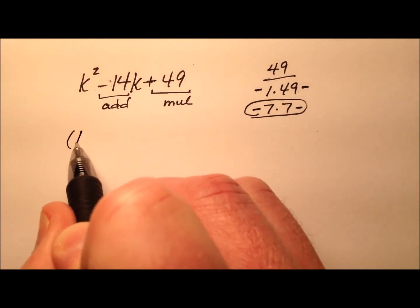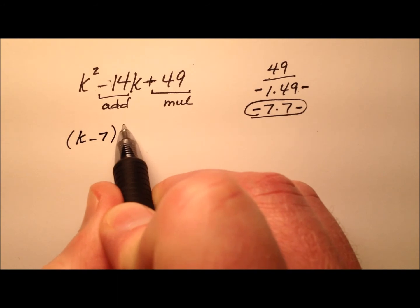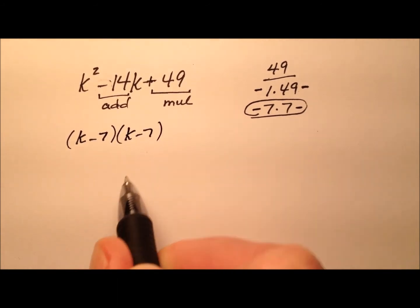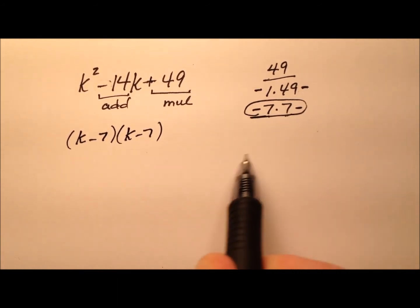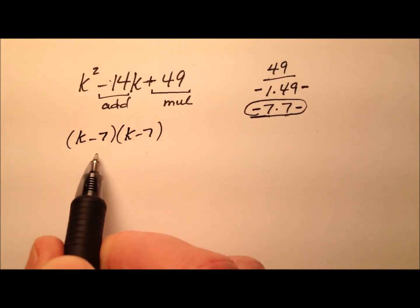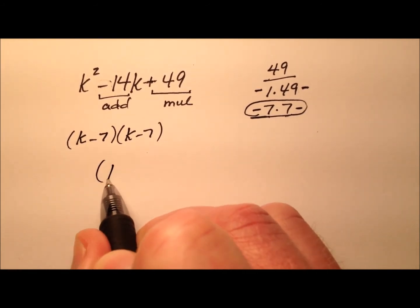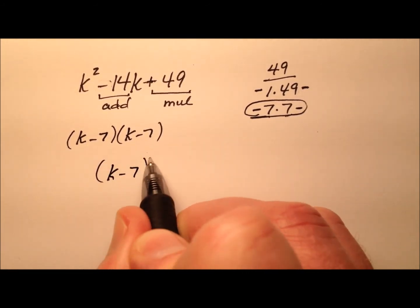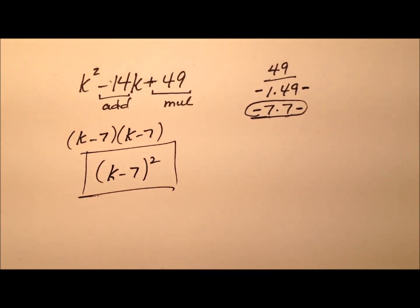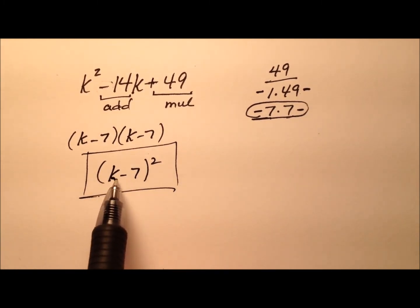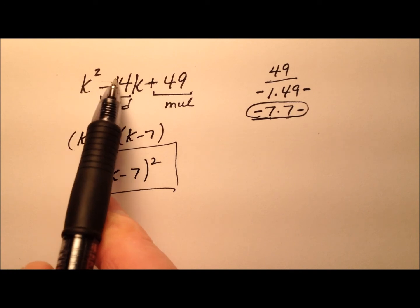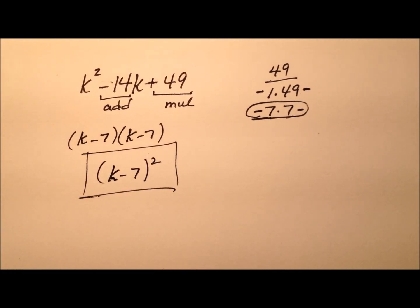So I'm going to break this up into k minus 7 and k minus 7. And again, that's from these 7s and they're both negative. But both of these factors happen to be the same, so I could say k minus 7 quantity squared. And so this will be the factored form for k squared minus 14k plus 49.